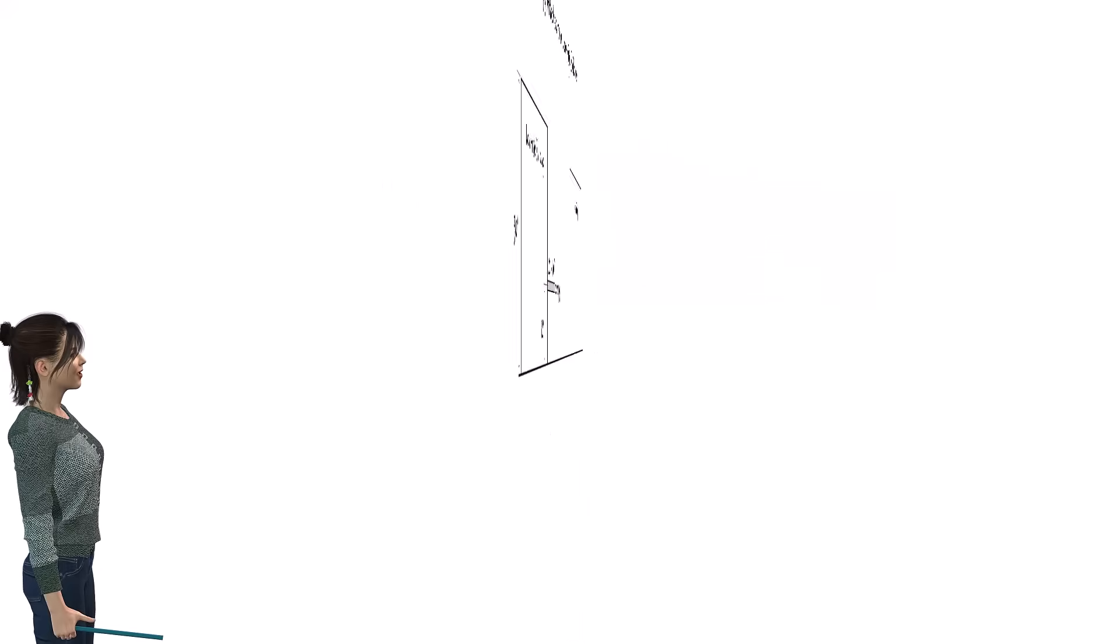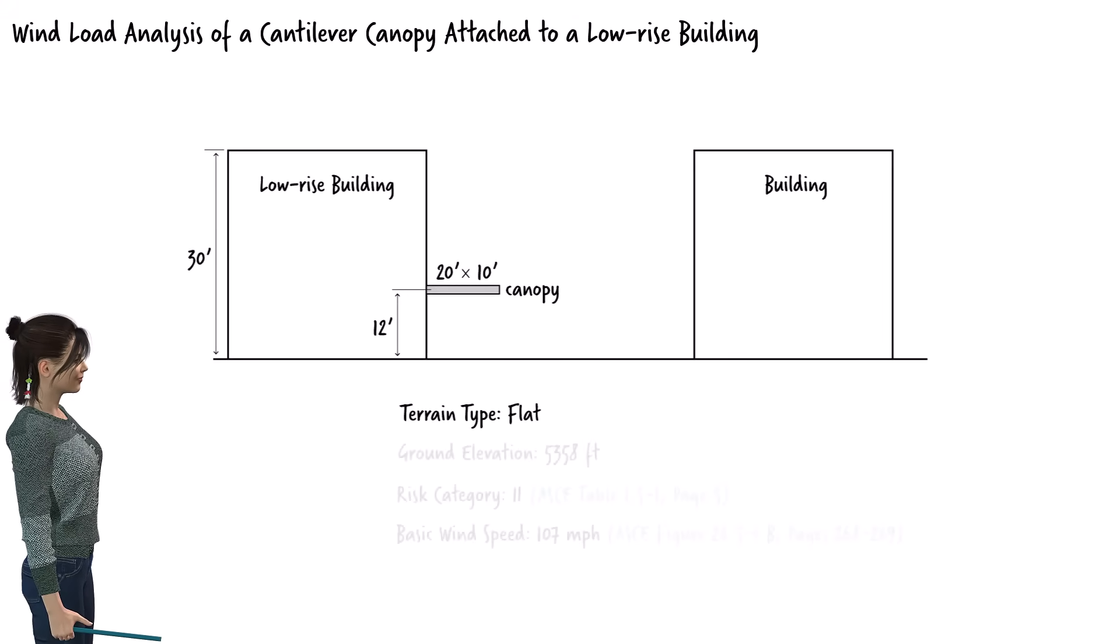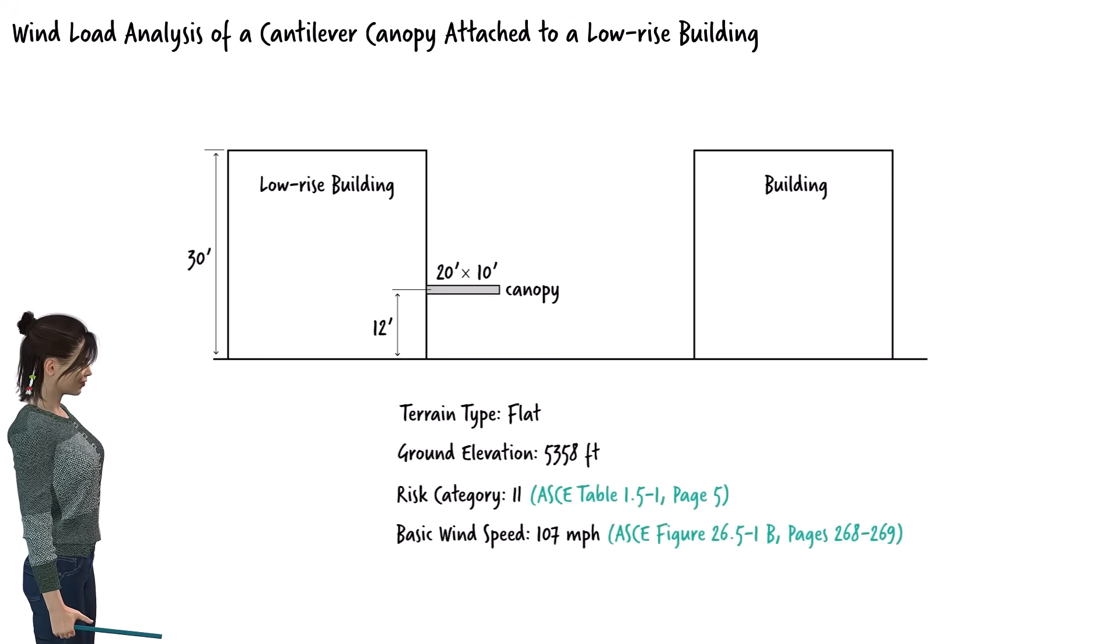Here is the summary of what we know so far. The pertinent dimensions of the canopy and relevant distances. We know the building is on flat terrain. We also know the ground elevation and the basic wind speed.